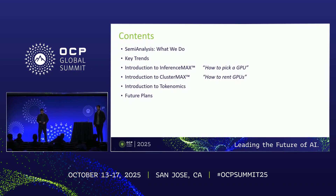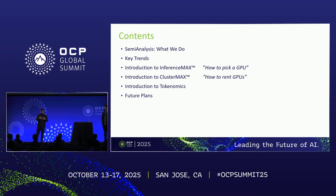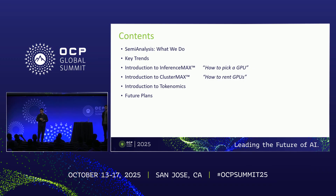Today we're going to give a brief explanation of Semi-Analysis, talk about the different teams and competencies. We'll take you on a journey about how you get from total cost, system costing, chip costing, BOM costing, all the way down to cost per million tokens. We'll show you how each Semi-Analysis practice area helps with that. But first, let's talk briefly about what we do.